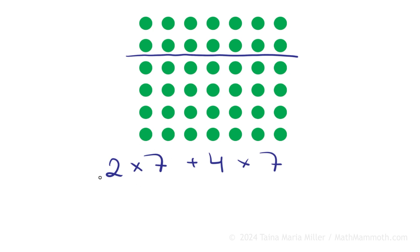2 × 7 is double seven, fourteen. Then 4 × 7. Well, that's just double that, right? Wouldn't four groups of seven be double two groups of seven? So that's twenty-eight. And total we get 42.